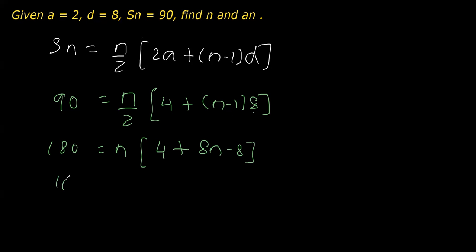With further simplification, this is 180 = n times 8n and 4 minus 8, which is 4 minus 8 equals minus 4. So 180 = 8n² - 4n.